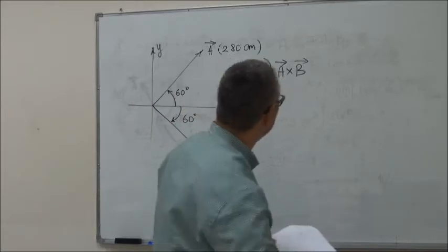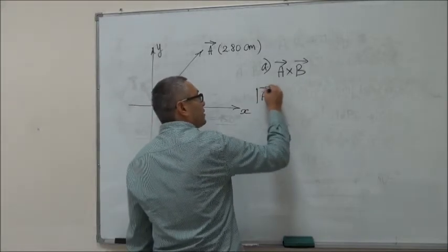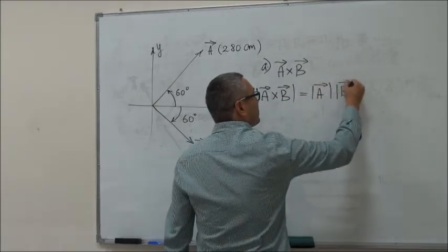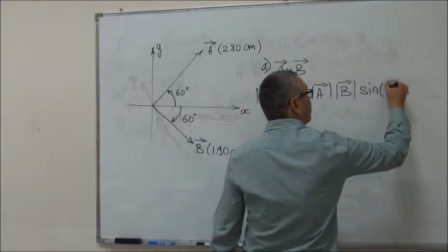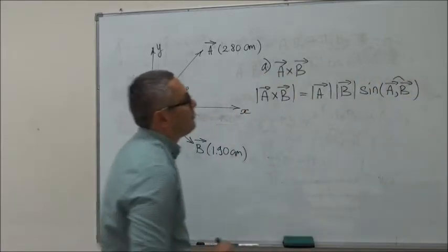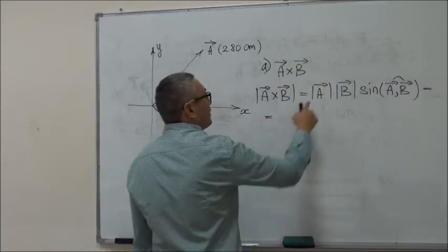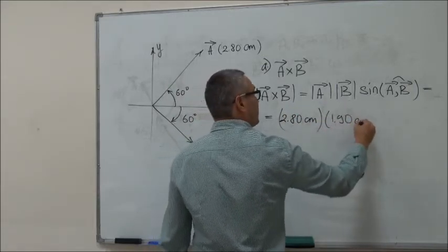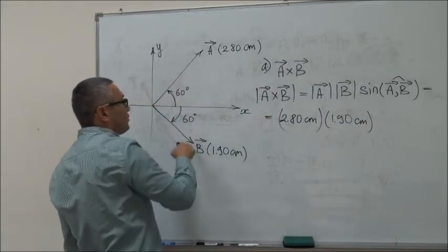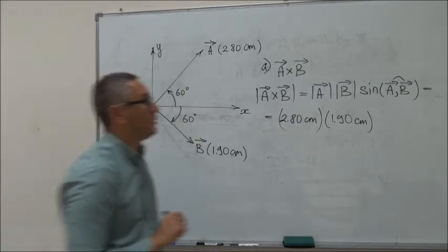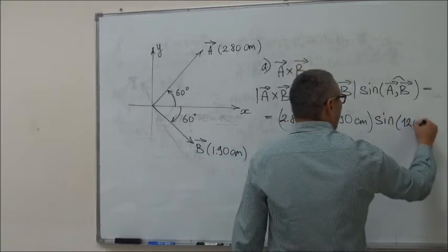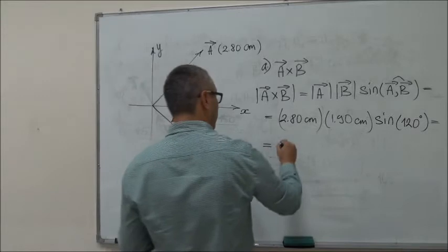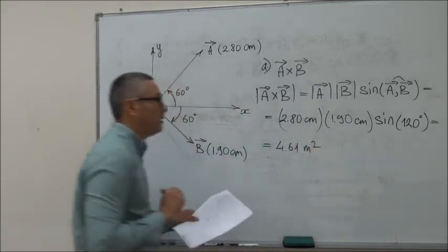Let's first calculate the magnitude of this vector. The magnitude of the cross product is given by the definition and is equal to the magnitude of A times the magnitude of B times the sine of the angle between the two vectors. So this is equal to 2.80 cm times 1.90 cm times sine of the angle between them, which in this case is the big angle of 120 degrees. Working this out gives 4.61 square centimeters.